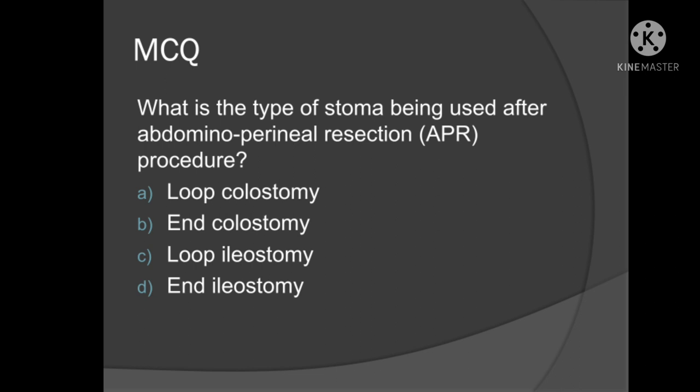Hi friends, let's have a look at these two short questions. The first question is: when a patient undergoes abdominal perineal resection for a cancer rectum, what is the type of stoma being used? The choices are: end colostomy, end ileostomy, loop colostomy, or loop ileostomy.